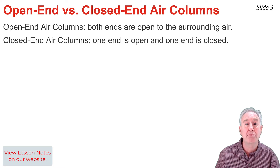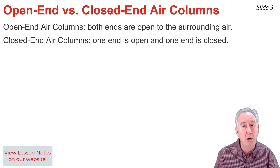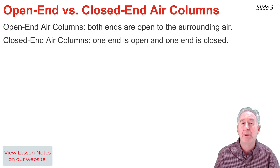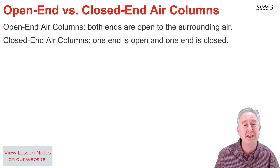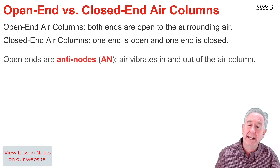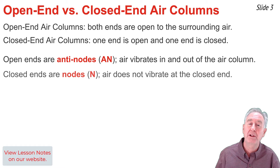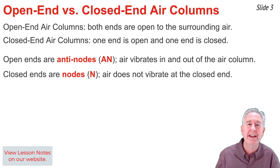An open-end air column has both ends of the column open to the surrounding atmosphere such that air can vibrate into and out of the air column. But for a closed-end air column, only one end is open to the surroundings and the other end is closed off. For both open-end and closed-end air columns, the standing wave patterns display an anti-node at the open end, since that is the location where air can vibrate wildly in and out of the tube. But the closed end of a closed-end air column displays a node, since air is unable to vibrate in and out at that location.